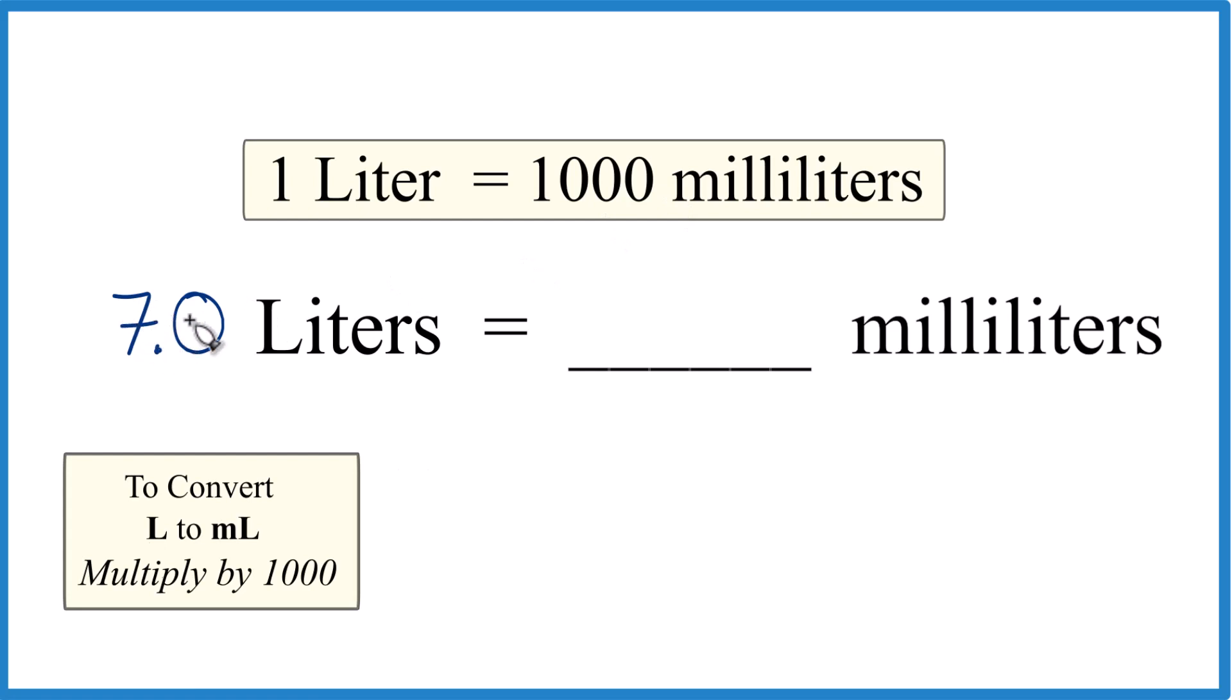So if we have 7.0 or just seven liters, it's going to be seven times 1,000 or 7,000 milliliters.